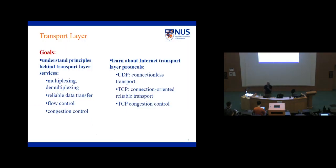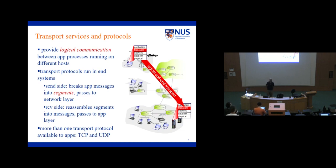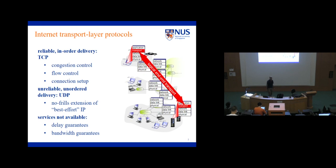On Wednesday, we were talking about transport layer, and we started off saying what are the different services that a transport layer protocol would usually provide. A transport layer protocol provides connectivity or a logical connection between processes running on two different computers. It also breaks up files into smaller packets and sends them out, and at the receiving end, puts them back together. We talked about how delay and throughput guarantees are not provided by transport layer, but things like congestion control, flow control, and connection setup may be provided if you use TCP. If you want a simpler protocol that doesn't do much beyond multiplexing and demultiplexing, you can choose UDP.